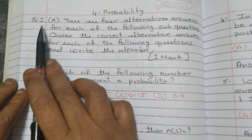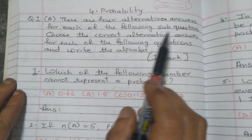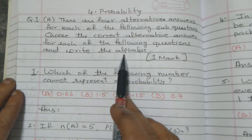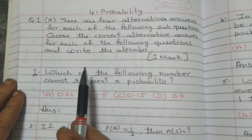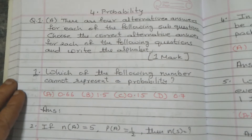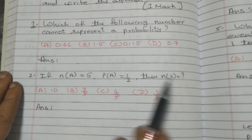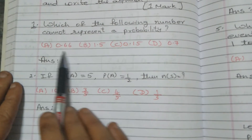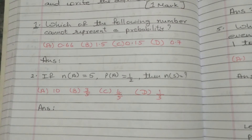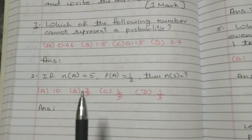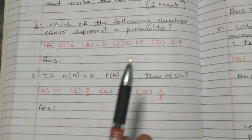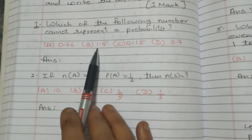Lesson 4, Probability, Question 1a. There are four alternative answers for each of the following sub-questions. Choose the correct alternative — these are MCQ questions. Question 1: which of the following numbers cannot represent a probability? The probability range is from 0 to 1, so option B is more than 1.